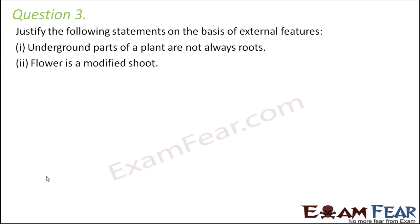Question 3: Justify the statement — underground parts of a plant are not always roots. Now that we have studied all the parts of the plant, we have seen that it is not always necessary that roots be underground — there can be aerial roots that grow above the ground. At the same time, there are other parts of the plant, like stems, which can be underground as well. So underground parts of a plant are not always roots; they can be stems too.